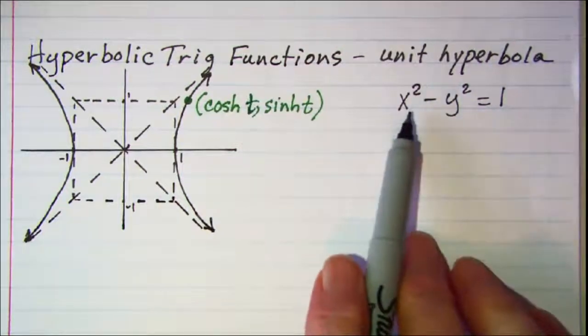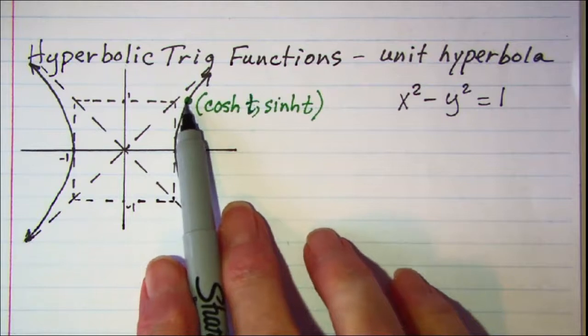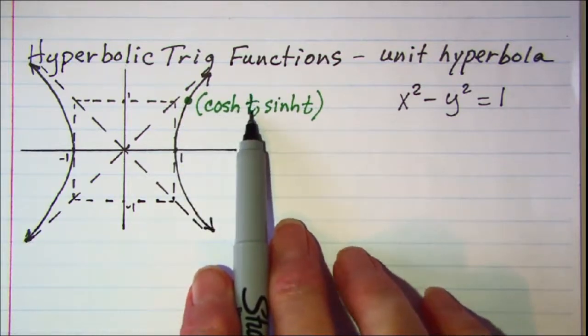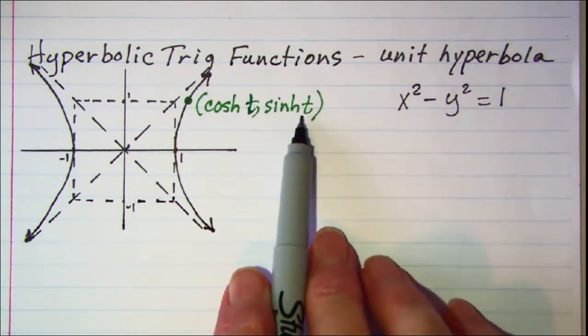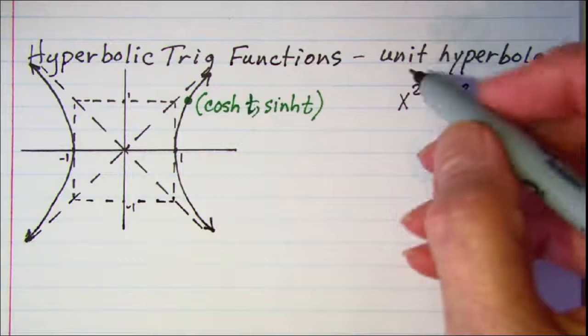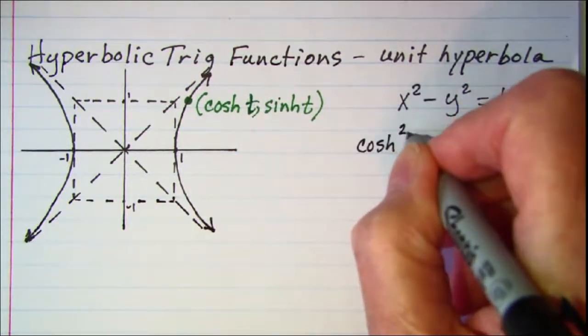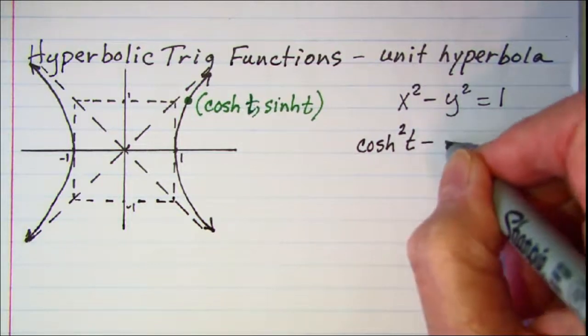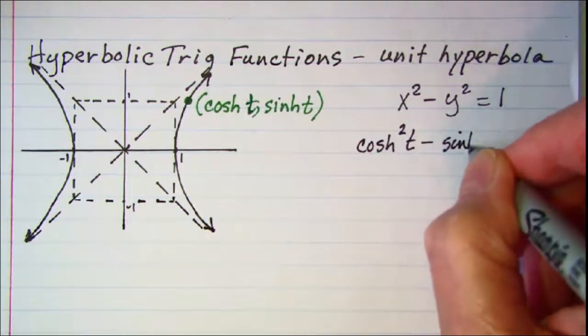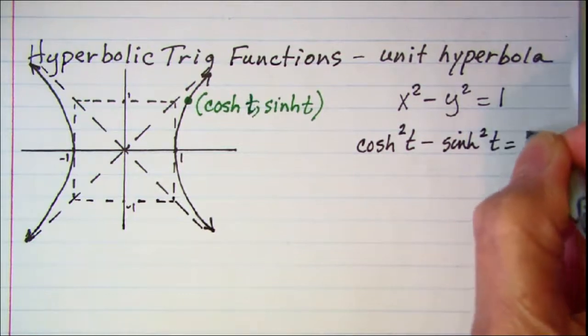Now let's go ahead and sub the coordinates of this point. Hyperbolic cosine t is the x coordinate and hyperbolic sine of t is the y coordinate. Let's sub that in so we have hyperbolic cosine squared of t minus the hyperbolic sine squared of t is equal to 1.